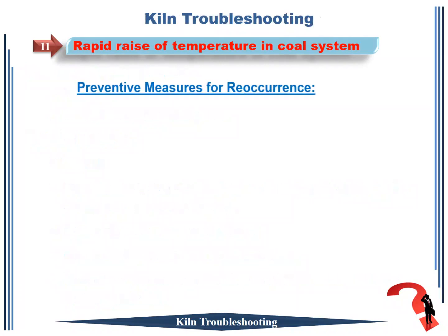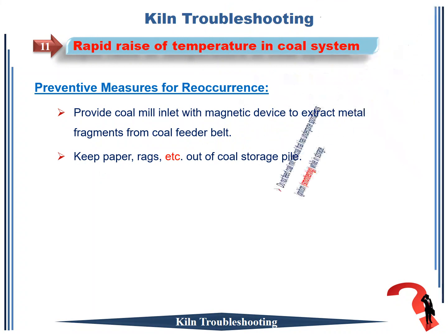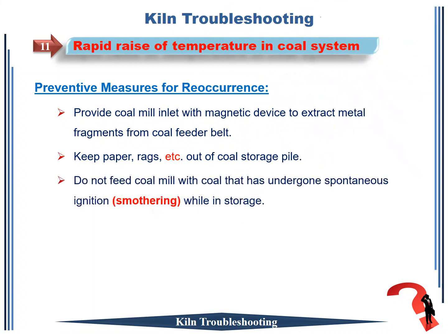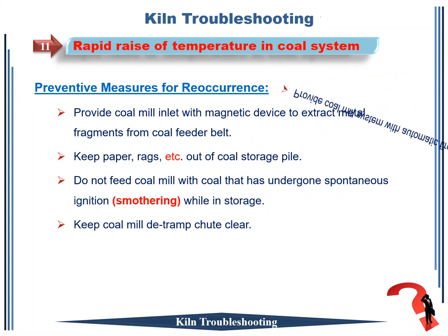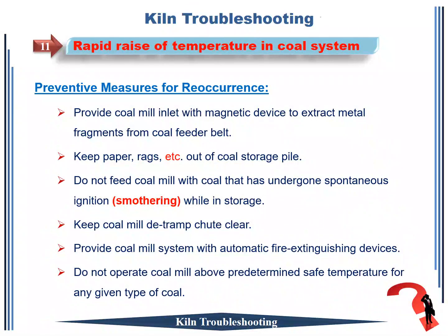The most important preventive measures to prevent reoccurrence: 1. Provide coal mill inlet with magnetic device to extract metal fragments from coal feeder belt. 2. Keep paper, rags, etc. out of coal storage pile. 3. Do not feed coal mill with coal that has undergone spontaneous ignition or smothering while in storage. 4. Keep coal mill trap chute clear. 5. Provide coal mill system with automatic fire extinguishing devices. 6. Do not operate coal mill above predetermined safe temperature for any given type of coal.